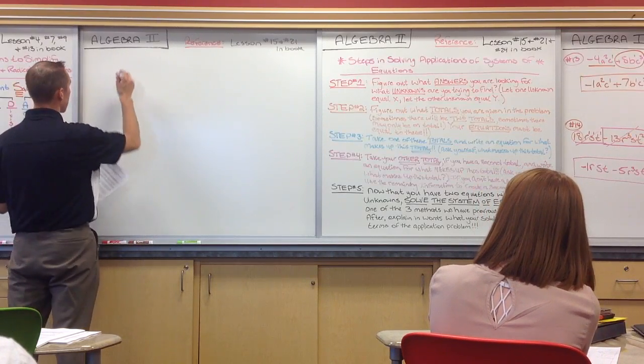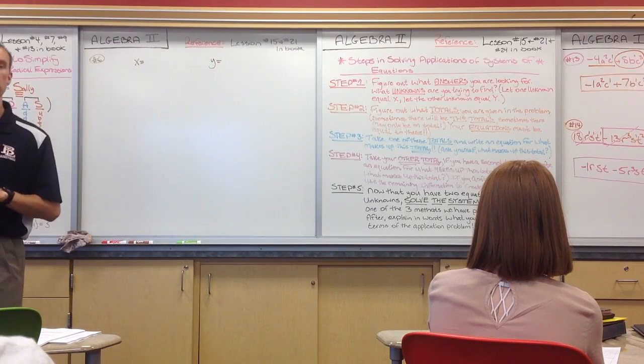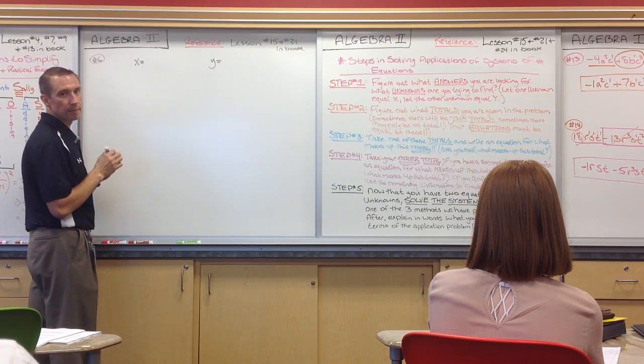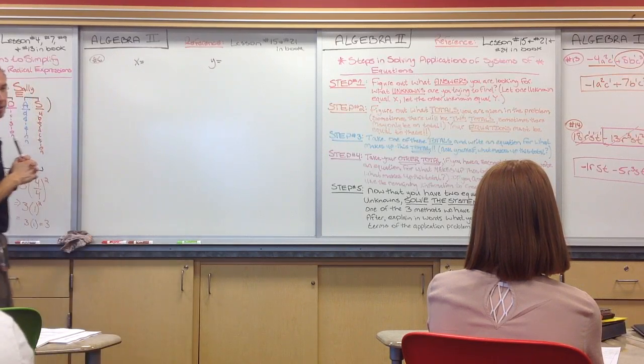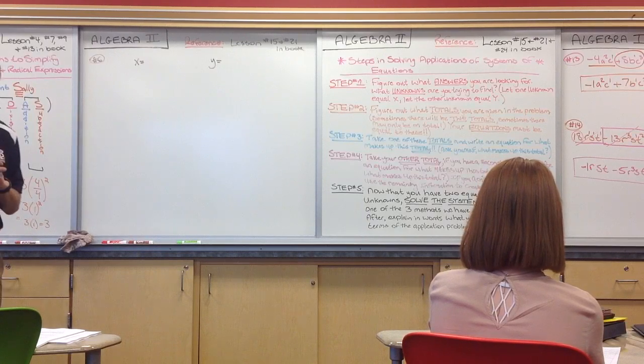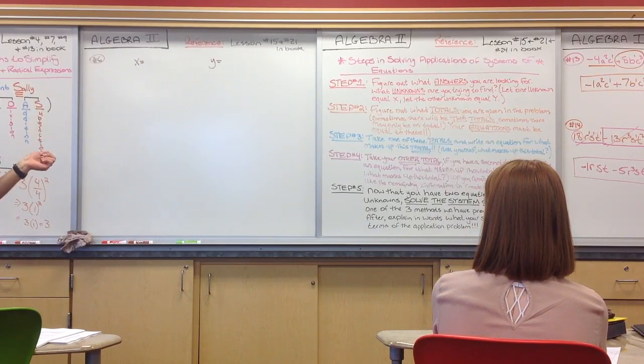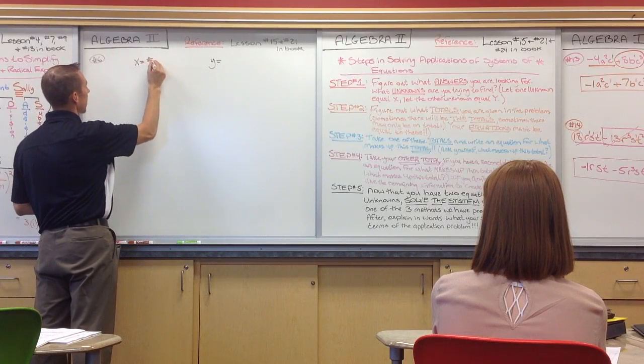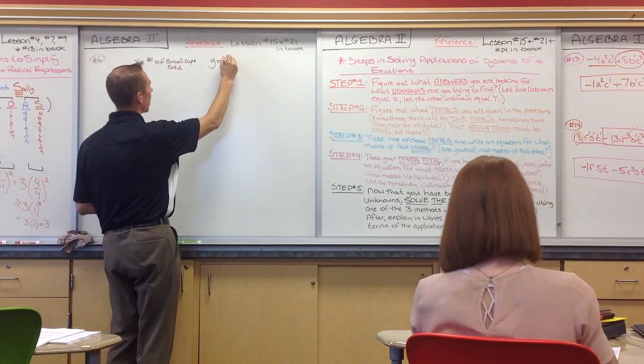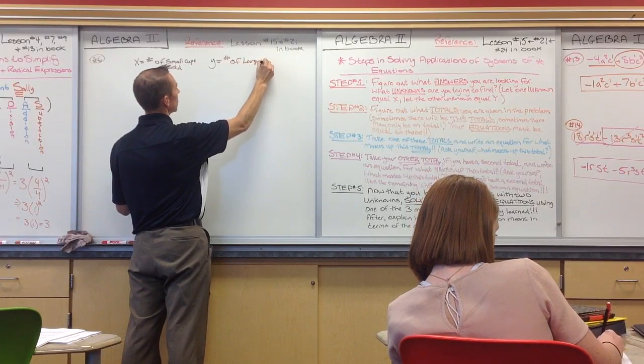All right. So, again, we must establish our two unknowns for number six. X is going to be equal to something. Y is going to be equal to some unknown. What is X going to be? Small cups. What about small cups? Do we need to know the number of small cups sold or the price? Yeah, we need to know the number. So, we have to write that down. We've got to establish that from the very beginning. Number of small cups sold. Y is going to equal what? Number of large cups sold.